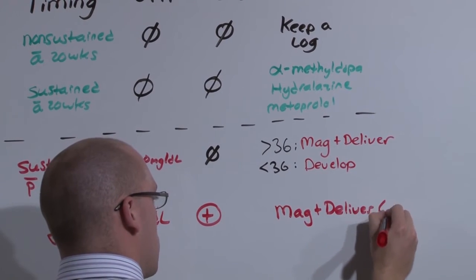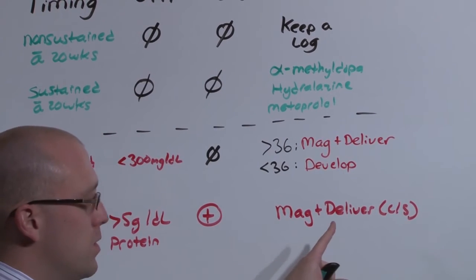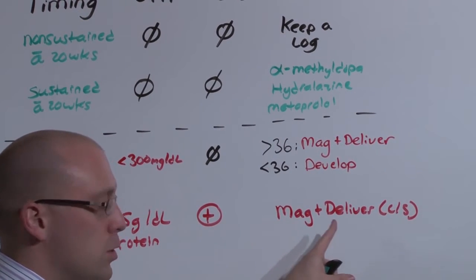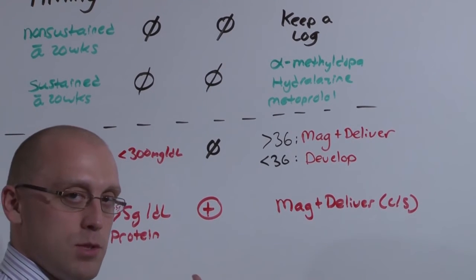You can induce with Pitocin, but mom is right around the corner from death. So you're going to have to probably do a C-section to get baby out. Once baby is out, the eclampsia symptoms will stop.